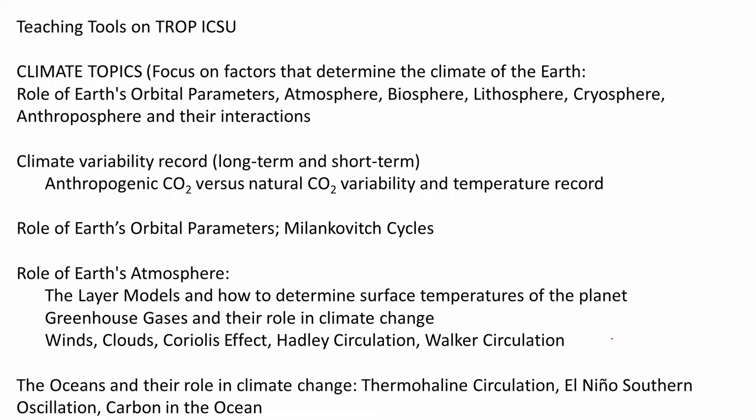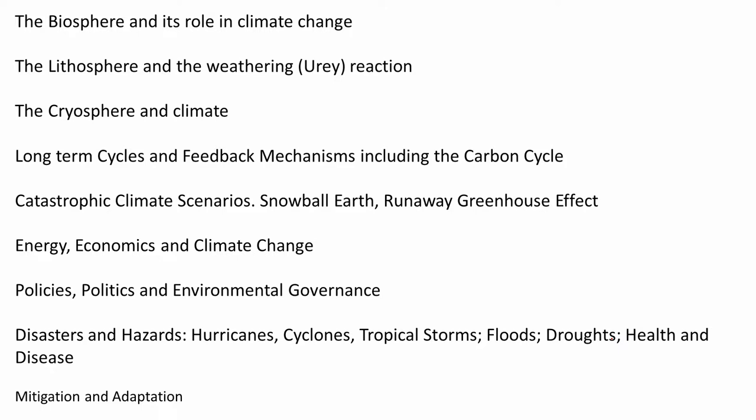We try to understand the roles of the Earth's atmosphere by looking at things such as layer models, greenhouse gases and their role in climate change, winds, clouds, and different types of circulation. We examine Earth's orbital parameters and how changes in Earth's orbit around the sun change the flux of energy received on planet Earth — Milankovitch cycles — as well as the roles of the oceans, biosphere, lithosphere, cryosphere, and long-term cycles such as the carbon cycle. Also interesting are energy, economics and climate change, policies, politics, and disasters.